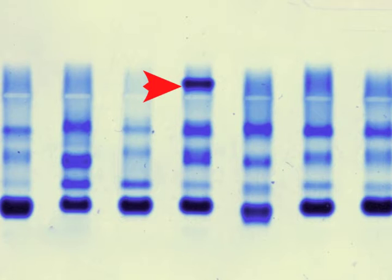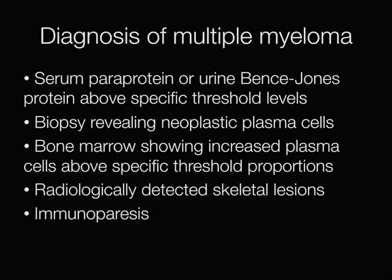An abnormal paraprotein in the gamma globulin band does not necessarily mean a patient has myeloma. To make a diagnosis of multiple myeloma, a number of criteria must be met depending on whether patients are symptomatic or asymptomatic. These include abnormal serum paraproteins or Bence-Jones proteins above specific threshold levels, neoplastic plasma cells on biopsy, increased plasma cells on bone marrow aspirate above specific proportions, radiologically detected skeletal lesions, and immunoparesis.